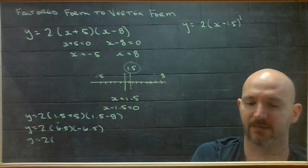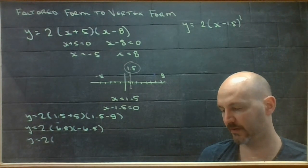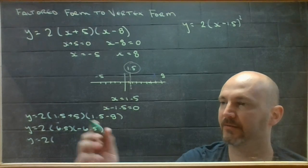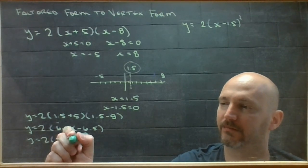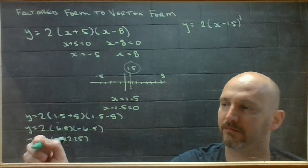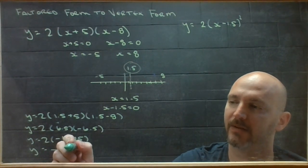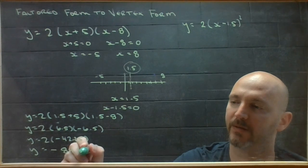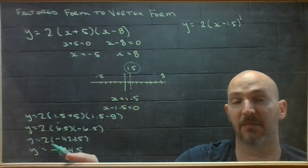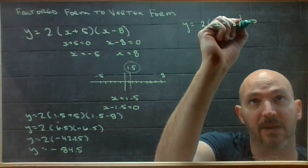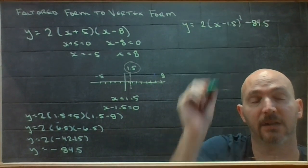6.5 times 6.5 I'm not going to be able to do this morning in my brain. I got 42.25. And if I double that, I'll end up with negative 84.5. So, my minimum value for this particular parabola is negative 84.5. That goes out the back. And we're done.